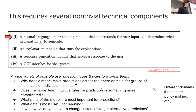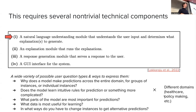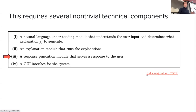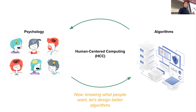Why does the model make predictions across the entire domain, for groups of instances, or individual instances? Does the model learn intuitive rules for prediction or something more complicated? What parts of the model are most important for predictions? What data is most useful for learning? All of this has to be answered for different domains from healthcare to policymaking. In different domains you might have domain-specific questions. The fact that these questions can be so different causes technical challenges for us to parse them into something that enables us to call the appropriate explainability method.